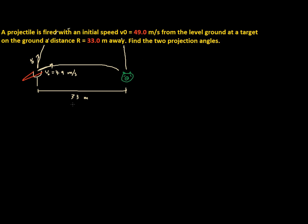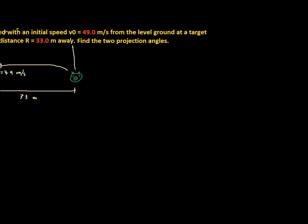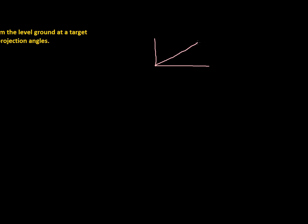How would we solve this problem? Let's review our vectors. If we have a vector with magnitude R at angle theta, the X component of R will be R times cosine of theta, and the Y component R_y will be R times sine of theta, where R is the magnitude of the vector.